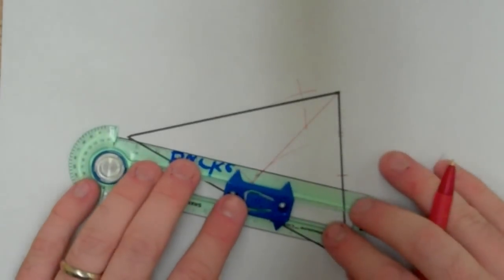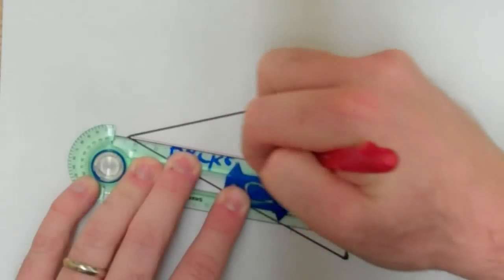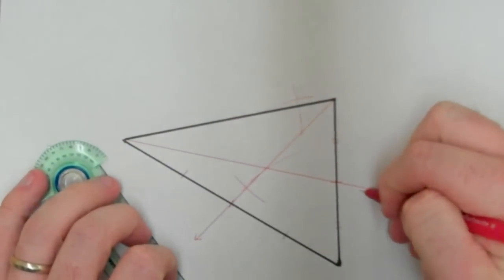So, to draw the median, I'm going to start at the vertex on the opposite side, right through that midpoint. And there's my other median.